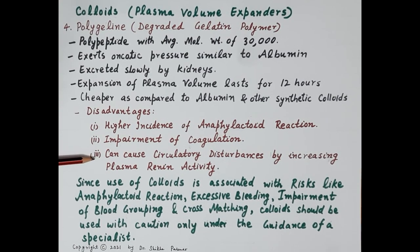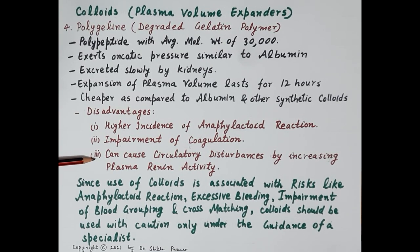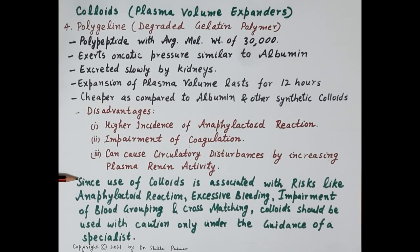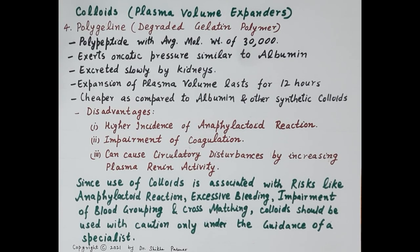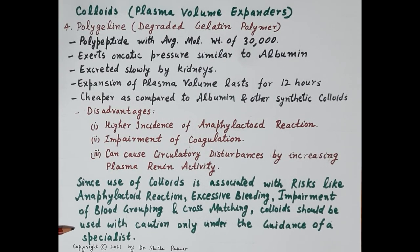Gelatins can cause circulatory disturbances by increasing plasma renin activity. Since the use of colloids — especially artificial colloids — is associated with life-threatening risks such as anaphylactoid reactions, excessive bleeding, and impairment of blood grouping and cross-matching, colloids should be used with caution only under the guidance of a specialist.